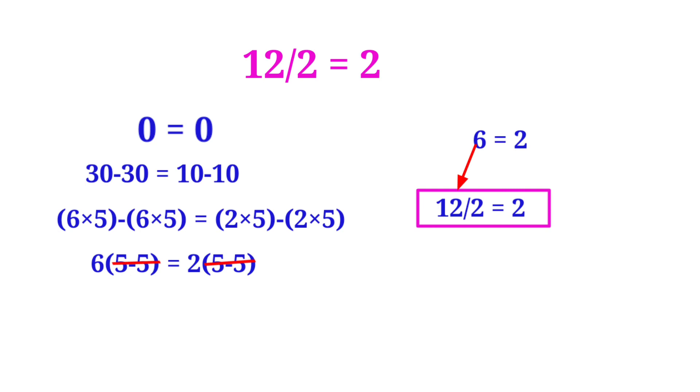I did a mistake here. See here. Here 6×(5-5) is equal to 2×(5-5). Actually 5-5 is equal to 0. So we can write as 6×0 is equal to 2×0.